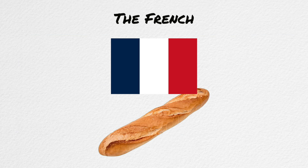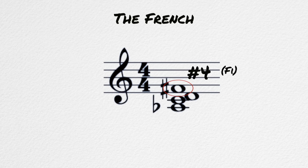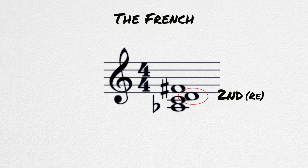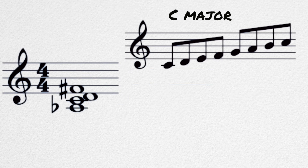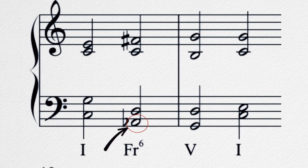The next is the French sixth, which is a four-note chord. It contains the same scale degrees as the Italian sixth with an added second scale degree. In C major, lower the sixth, keep the root and the second, and raise the four, and you'll get A flat, C, D, F sharp. Stick the A flat in the bass and you are good to go.